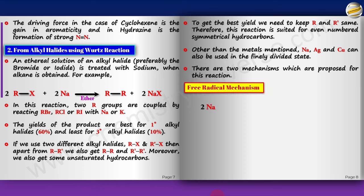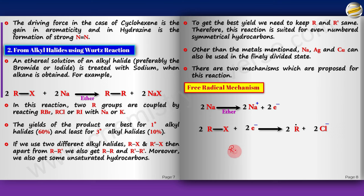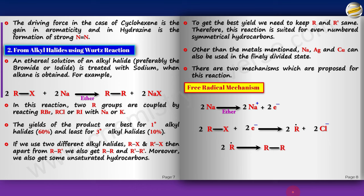The free radical mechanism: two sodium atoms oxidize (give one electron each) to the two RX molecules; X⁻ leaves and two R• radicals form. When the two R• radicals combine, you get R–R, and NaX precipitates out of the ether solution.